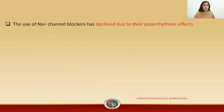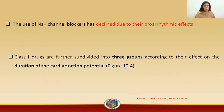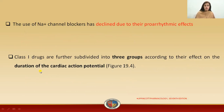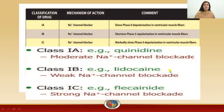These sodium channel blockers have declined use — they are not used as much now because of their pro-arrhythmic effects. Within the class 1 agents, there are three further groups divided on the basis of the duration of cardiac action potential: class 1A, class 1B, and class 1C.